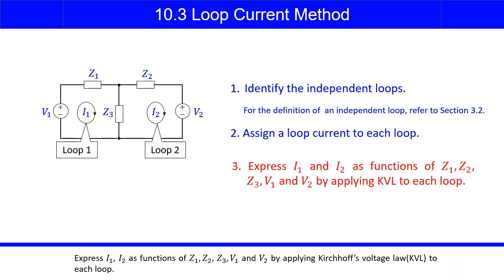Express I1 and I2 as functions of Z1, Z2, Z3, V1, and V2, by applying Kirchhoff's voltage law, KVL for short, to each loop.